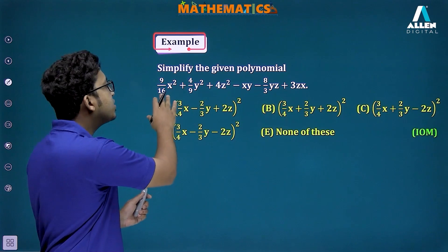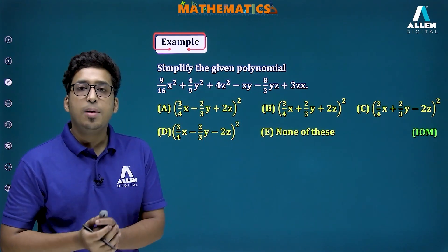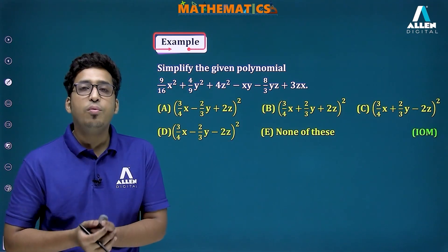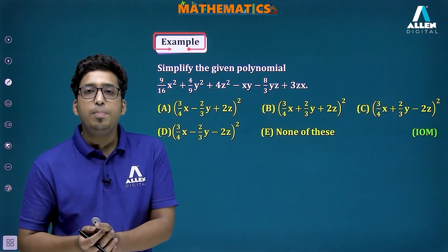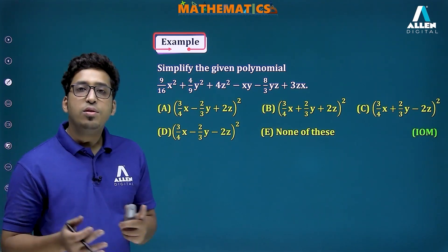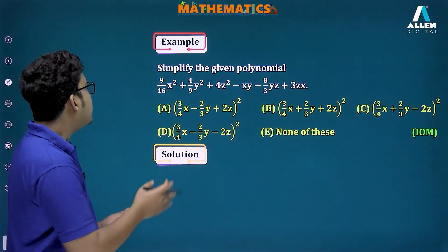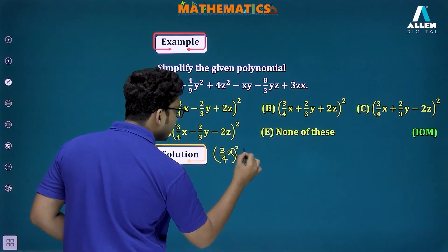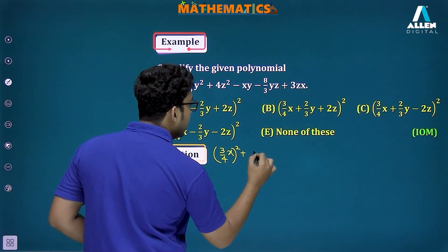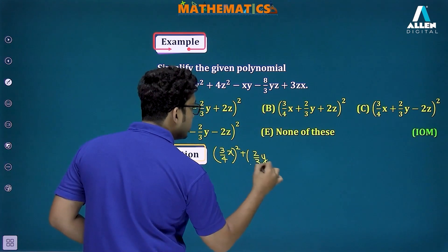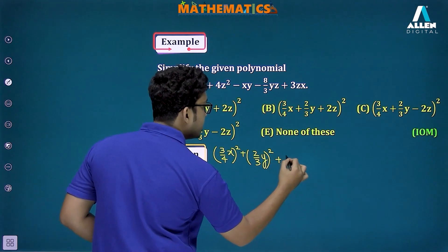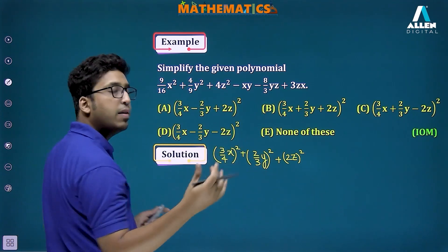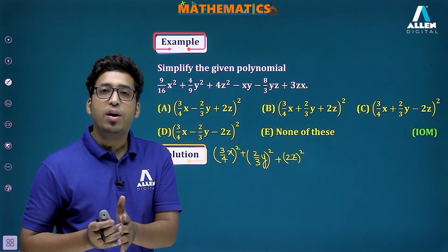Next question: simplify the given polynomial. We can see terms like x², y², z², xy, yz, zx, suggesting we apply the (a+b+c)² identity: a²+b²+c²+2ab+2bc+2ca. We identify: (9/16)x² = (3/4 x)², (4/9)y² = (2/3 y)², and 4z² = (2z)². There is a negative sign in the expression, so one of the terms must be negative.